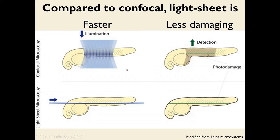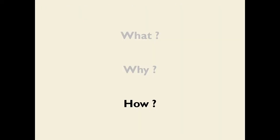The other major difference is that light sheet microscopy is much less damaging than confocal microscopy. In confocal microscopy, we are illuminating things that we are not recovering information from — things that are out of the plane of focus, which are the cones of converging and diverging light. We are bleaching things that we are not looking at. Multiplied by many Z-stacks, this can be quite damaging. In contrast, in light sheet microscopy, we are only illuminating the region that we are actually imaging, so photodamage is significantly less.